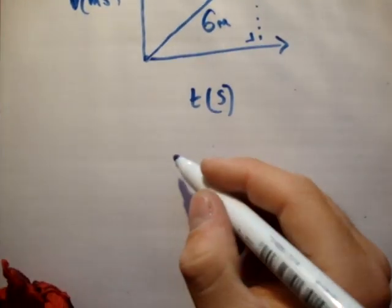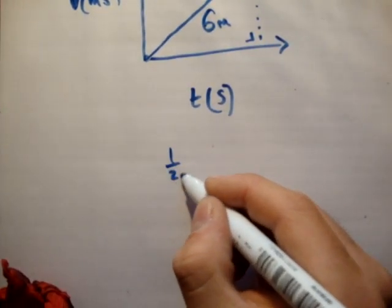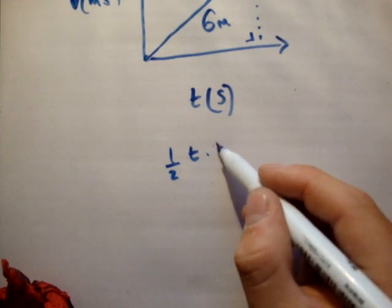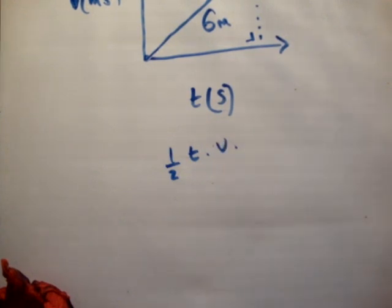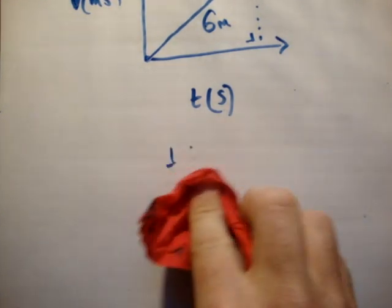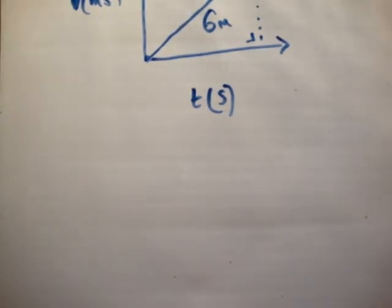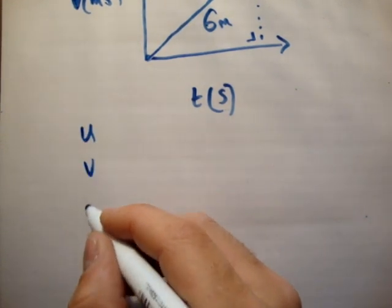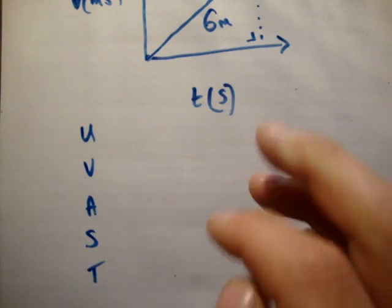What's the area of that? Well, that's half the base, which is t, times the perpendicular height, which is v. We don't know either of those things, so we can't go about getting our answer that way. So we're going to use u, v, a, s, t.